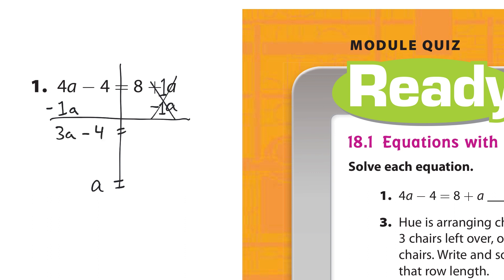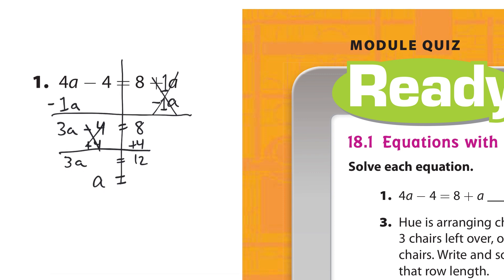So you subtract 1a here. 4a minus 1a is 3a. So we have 3a minus 4 equals 8. Now the plan is to move my constants to the right-hand side using inverse operations again — that would be adding 4. These cancel, and you get 3a equals 12.